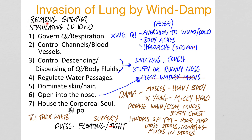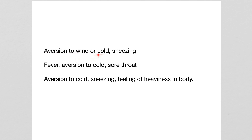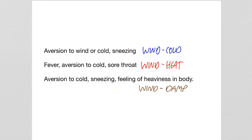We treat them all by releasing the exterior, creating a sweat, and stimulating the lung's descending and dispersing function. We either expel the cold, clear the heat, or resolve the damp as needed. Key symptoms: aversion to wind or cold and sneezing is wind cold; fever, aversion to cold, and a sore throat is wind heat; and aversion to cold, sneezing, and a feeling of heaviness in the body is wind damp.